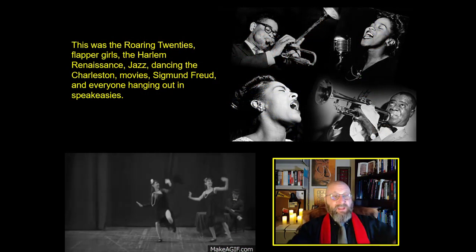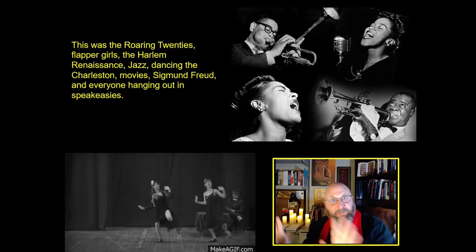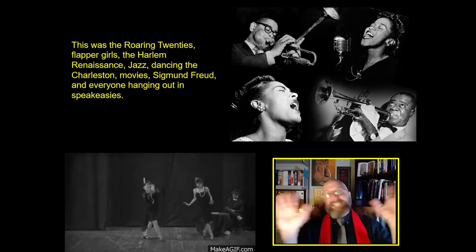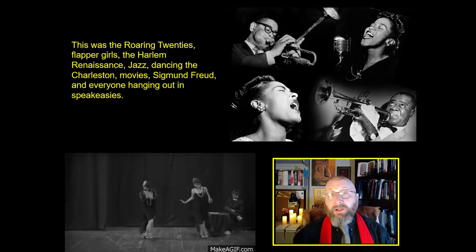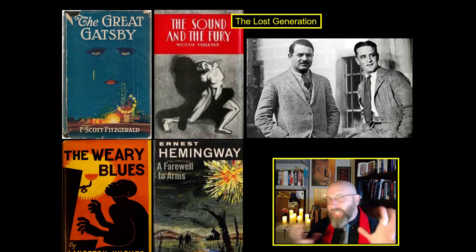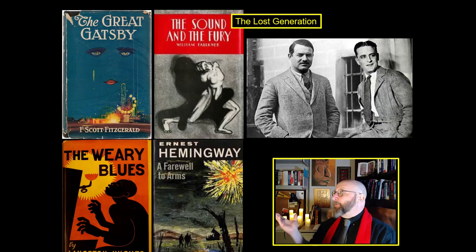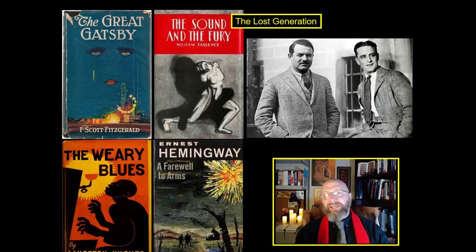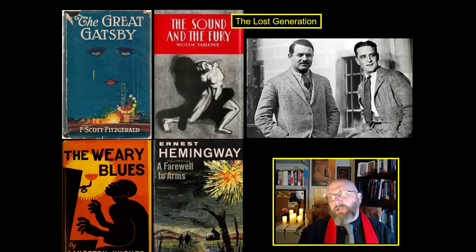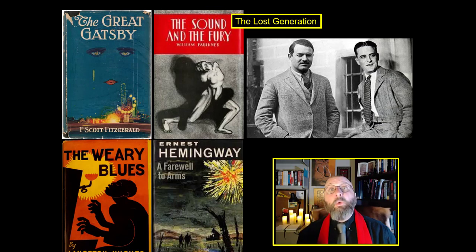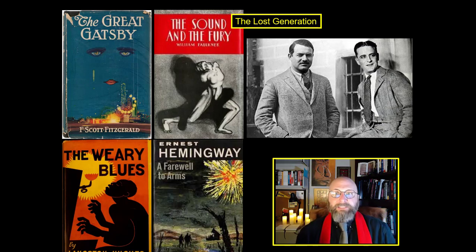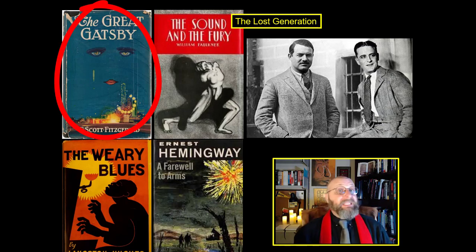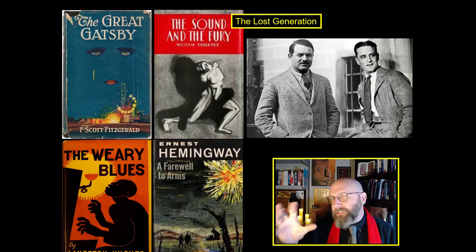This was the Roaring Twenties — flapper girls, the Harlem Renaissance, jazz, people dancing the Charleston, talking about Sigmund Freud, hanging out in speakeasies. There was a birth of American literature, art, and letters. This was the period of the Lost Generation — jaded veterans coming back from World War I, thinking they had fought for civilization and democracy, only to find they were largely fighting to save the bottom line of New York banks. Lost Generation writers were really cynical — deeply pessimistic authors like Ernest Hemingway, William Faulkner, Langston Hughes, and F. Scott Fitzgerald, whose The Great Gatsby is arguably the most famous novel of all time.